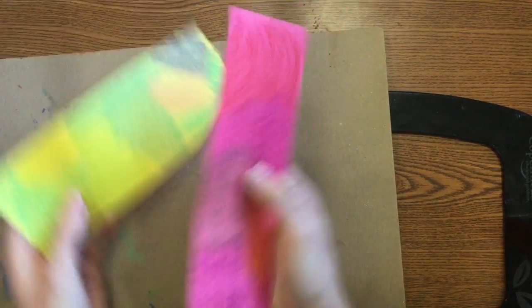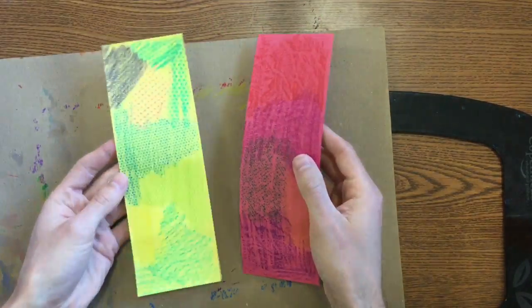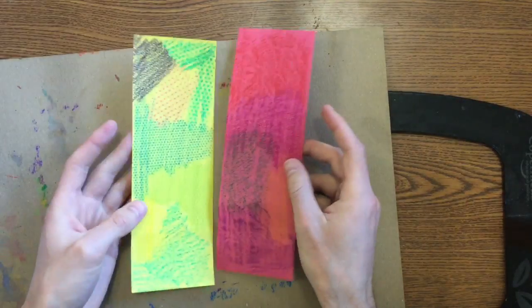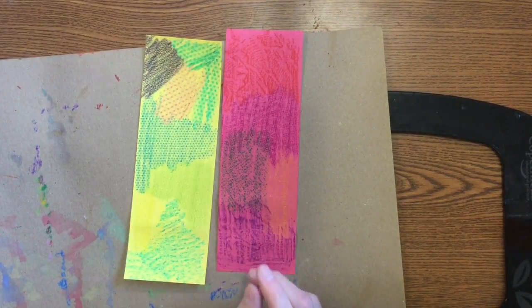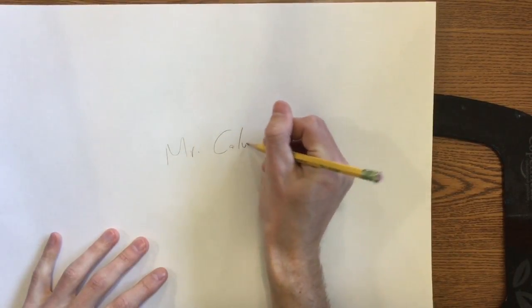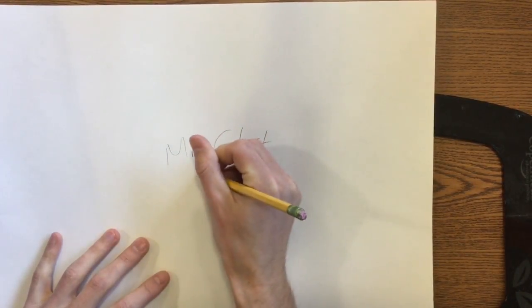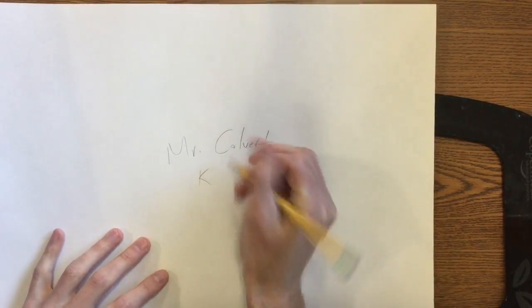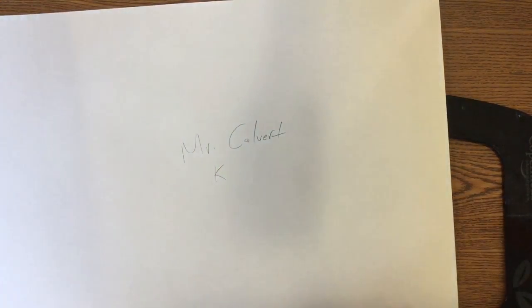When I'm all done filling up both strips of paper with my textures and I've put away my crayons, I can go and get this white sheet of paper off the supply table. I need to put my name on the back of it right away. I know you might accidentally forget because we didn't do it right away today, but please get your name on it—Mr. Calvert and K in whatever class you're in.